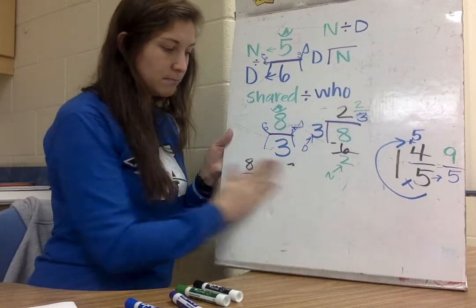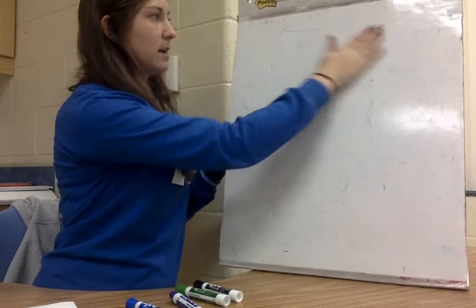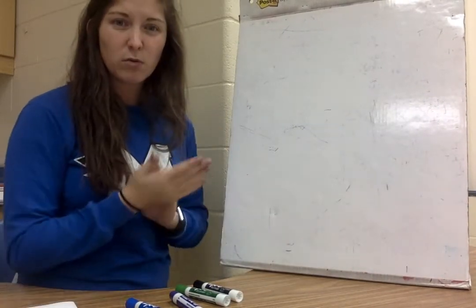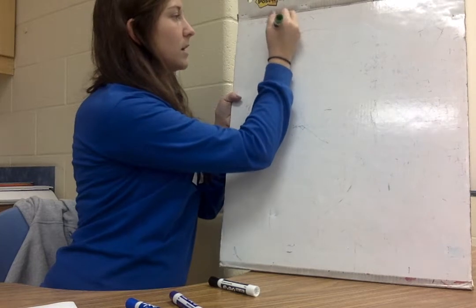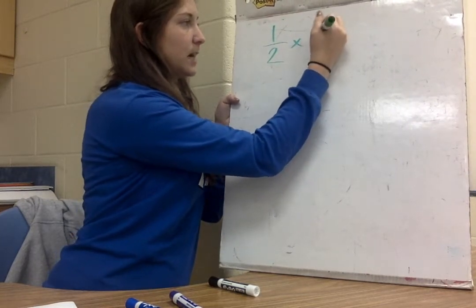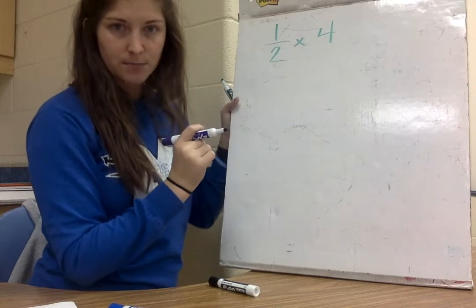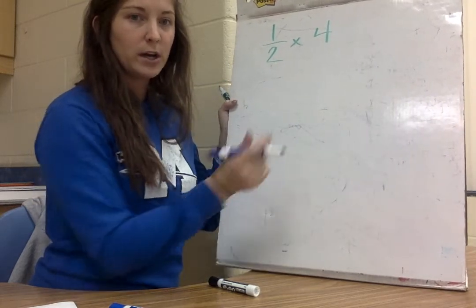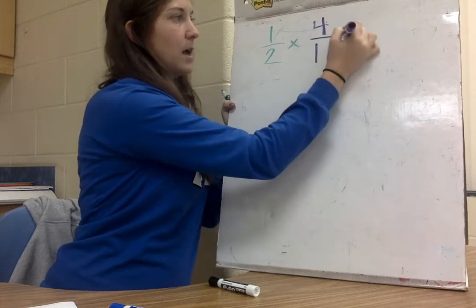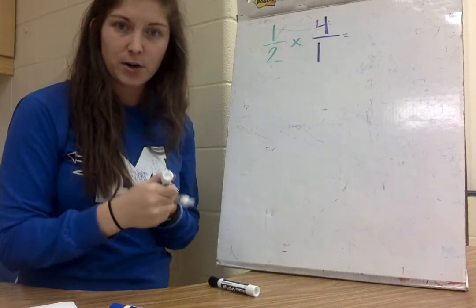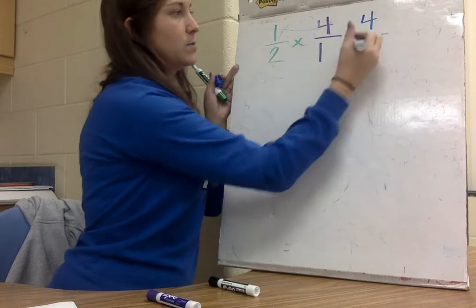Now I want to get into multiplying. Some of you may have talked about more than just multiplying whole numbers and fractions, but most of us only talked about that, so we're going to quickly review multiplying whole numbers and fractions. If I multiply one half times 4, I have to make that 4 into a fraction by putting a 1 underneath it — so 4 over 1. Then I multiply straight across: 1 times 4 is 4, and 2 times 1 is 2.